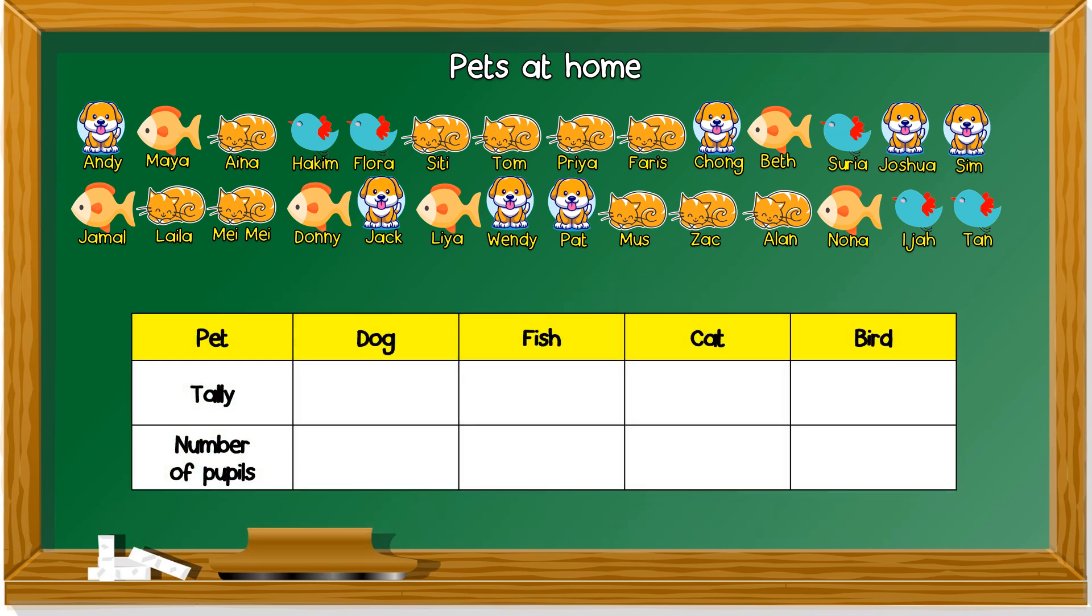Next, we want to know how many. For dog, tally, you do tally like this. One, two, three, four, five. Five, you stroke it like this. You stroke it like this, so you know that when there's with a stroke, it's five.